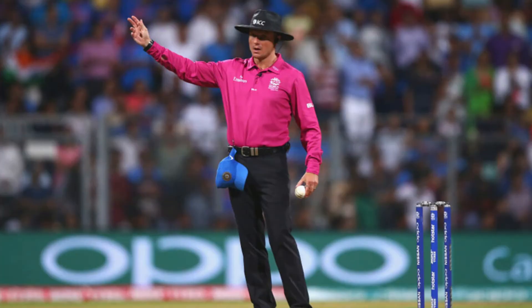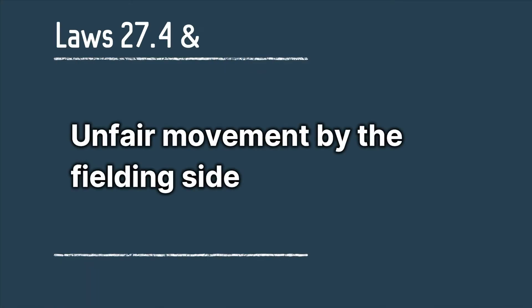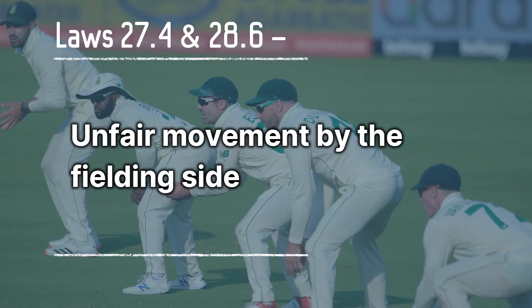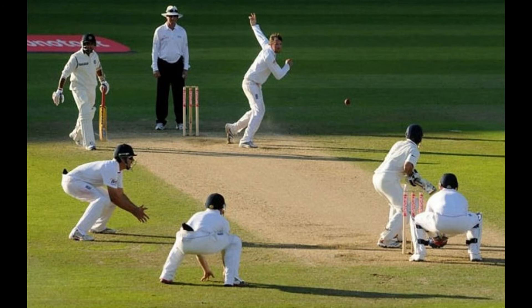Laws 27.4 and 28.6: Unfair Movement by the Fielding Side. Once the field is set, fielders are not supposed to move from their position once the bowler starts the run-up. If there is any movement from the fielding side, the batting team gets five penalty runs. Earlier, umpires used to signal it as a dead ball, but not anymore. The fielders have to be really careful here.